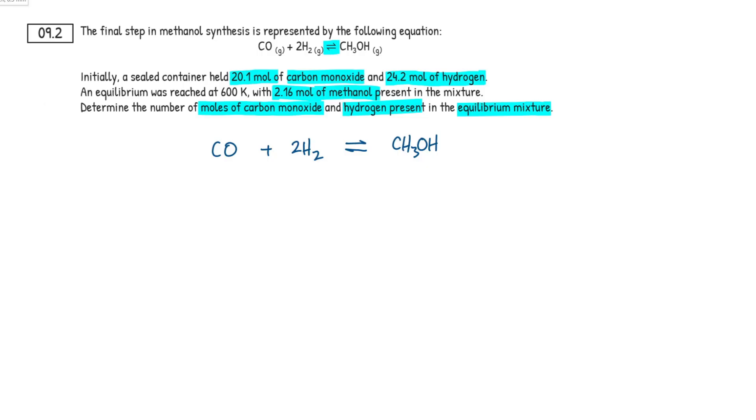So ICE tables then. What does this actually mean? So I stands for initial, C stands for change, and E stands for equilibrium or at equilibrium. And this always refers to moles. So amount of things that are changing.